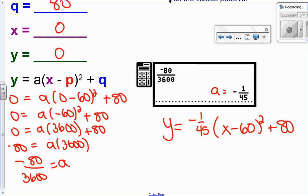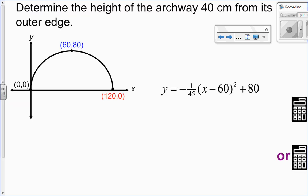We're going to use this equation to solve the next part of the problem. So the next part of the problem says, determine the height of the archway 40 centimeters from its outer edge. So there's my equation. I know if I go in 40 centimeters, and then I go up, this is what they're asking me. What is the height right there? So that 40 is an x value. So basically, it's saying, if x is equal to 40, what does y equal? So let's go to our equation.